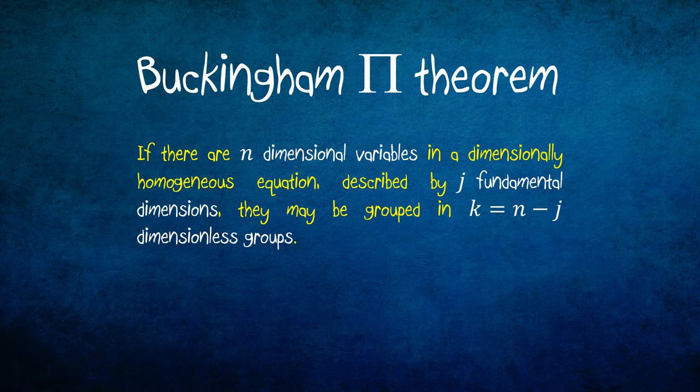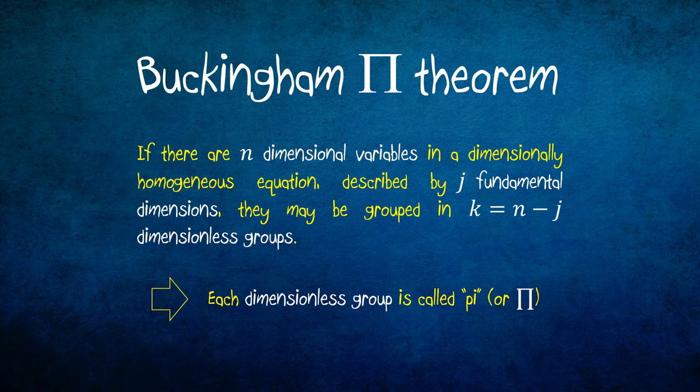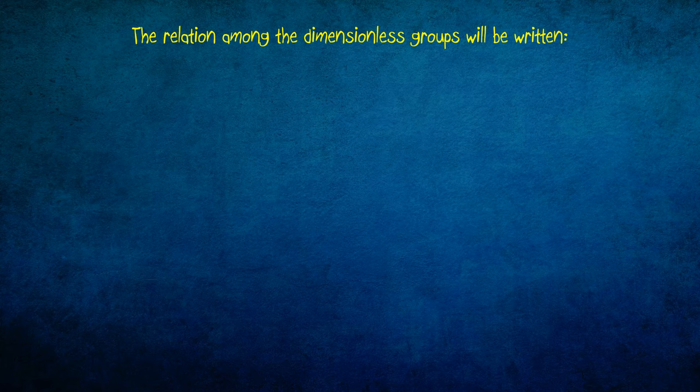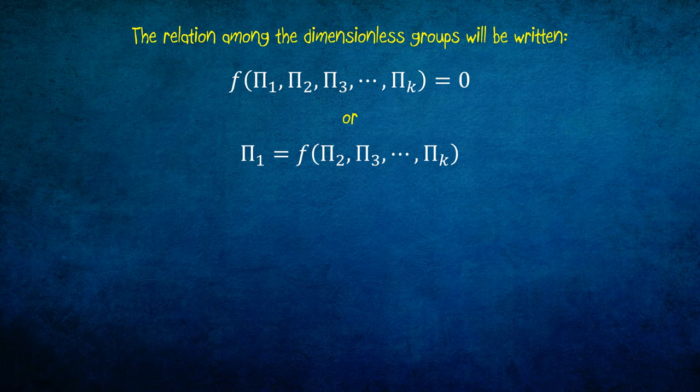Each dimensionless group is called pi, and the relation among the dimensionless groups will be written as follows: function of pi 1, pi 2, pi 3, until pi k equals 0. Or pi 1 is a function of pi 2, pi 3, until pi k.